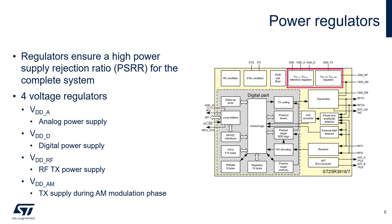The ST25R3916 has four internal voltage regulators. These regulators supply the voltages needed for the analog circuitry, the digital circuitry, the RF transmitter, and the transmitter amplitude modulated level. These internal regulators have excellent power supply rejection ratios, which ensure very stable voltages are supplied to the internal circuitry.